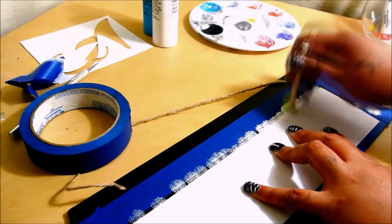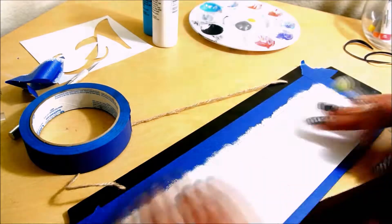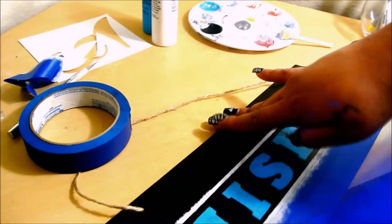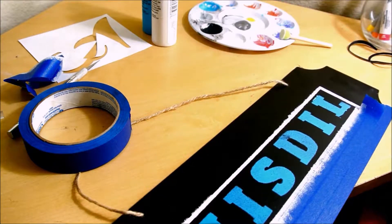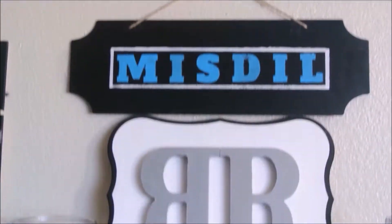I used white paint and a sponge brush also to give the texture that I want. And there you go, a very easy, very simple name initials for your wall or for your room.